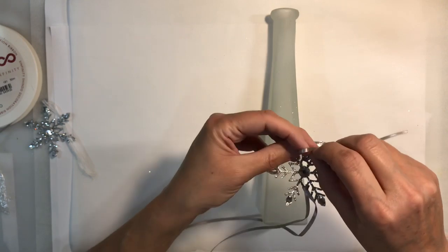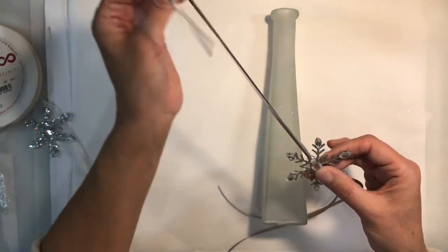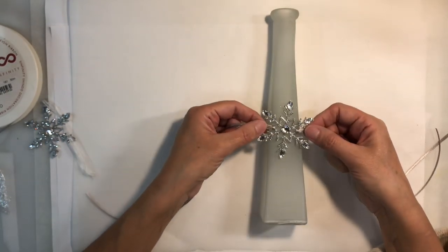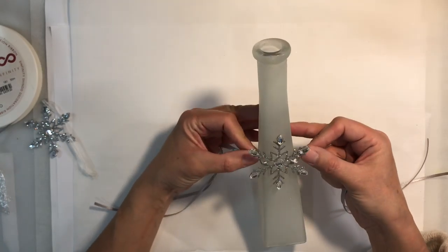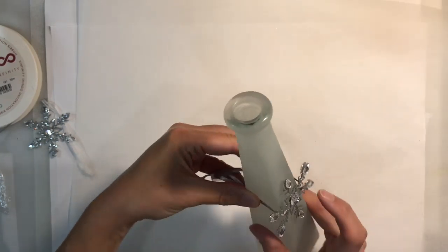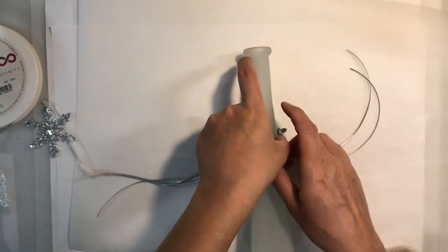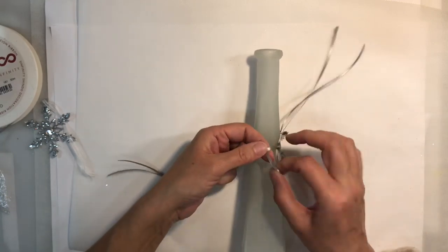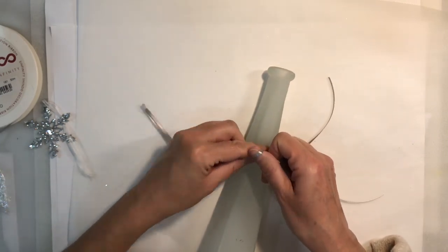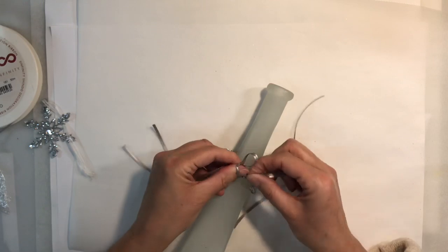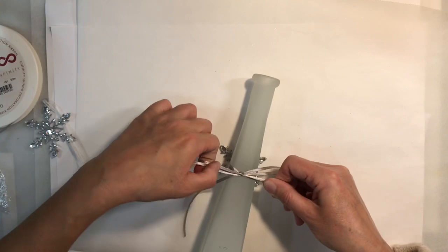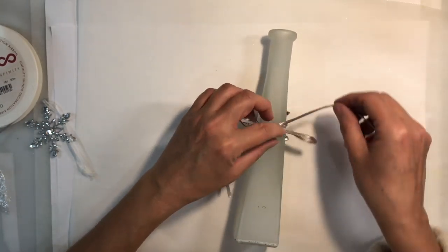And do the same. And this will allow me to secure it to the vase. So we'll do the same here. So just pop that through there and secure it like that. So that's nice and neat. And then what I'm going to do is I'm just going to see where I want that on my vase. And I'm just going to wrap it round and tie it at the back. So I'll hold that in place, flip it over and I'm just going to tie a knot at the back.